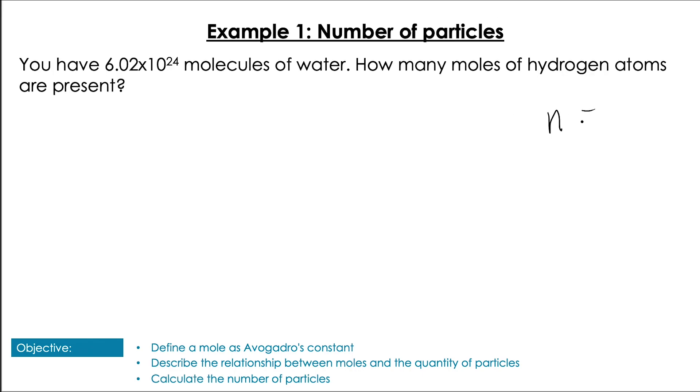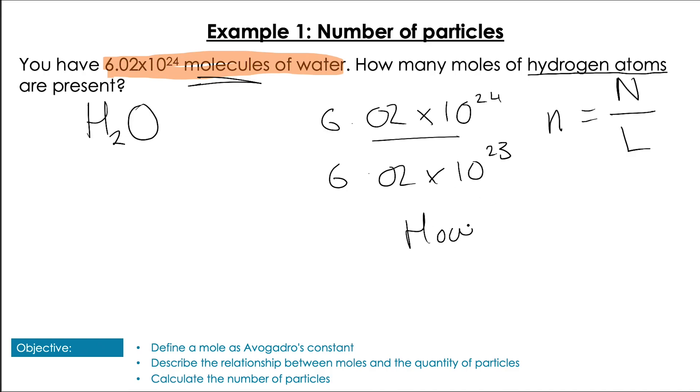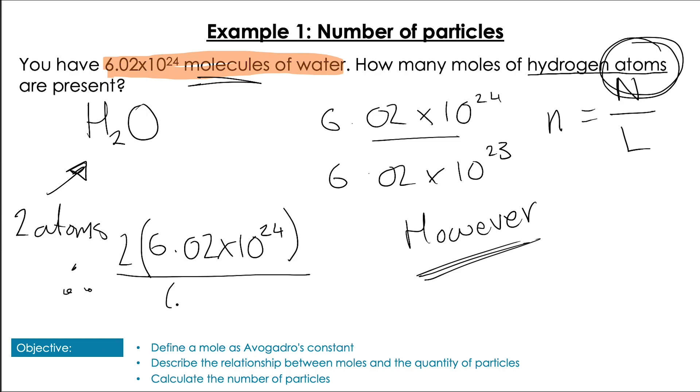So in this first example we've been given a number of molecules of water so I'm just going to write my equation down so I've always got it there and I'm going to highlight in the question the thing that is important to me. So that's the number of molecules of water and what the question is asking me for which is the hydrogen atoms. So I know I'm looking at H2O and I've got this many molecules of H2O so it would seem initially that it's quite simple. I do my number of molecules of water divided by Avogadro's number however it's said hydrogen atoms and you can see here that there are two atoms of hydrogen in every water molecule so we have to multiply the term by two so we get 6.02 times 10 to the 24 multiplied by 2 over 6.02 times 10 to the 23. This of course gives us a slightly different answer and the answer in this case is 20 moles.